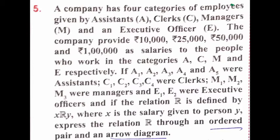Question number 5: A company has four categories of employees given by Assistant (A), Clerk (C), Manager (M), and Executive Officer (E). The company provides 10,000, 25,000, 50,000, and 1 lakh as salary to the people who work in categories A, C, M, and E respectively.